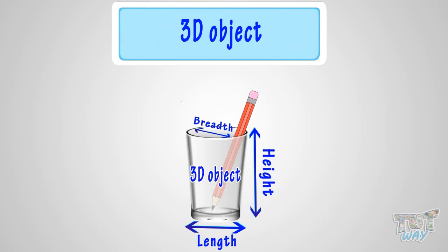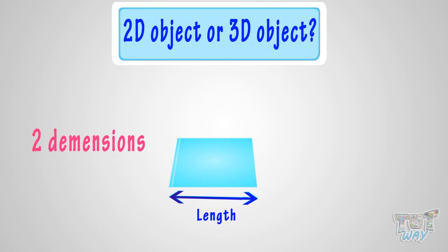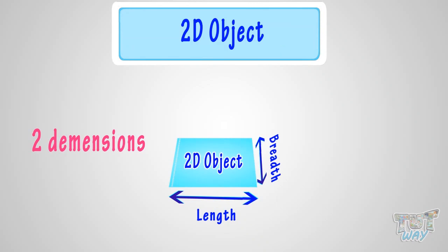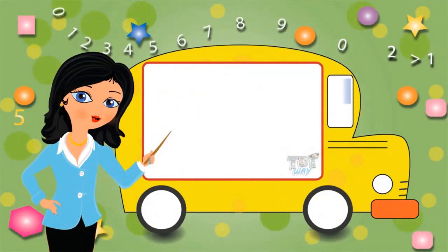Now one more object — is it a 2D object or a 3D object? It's a paper. This object has only two dimensions: length and breadth, and we cannot put something in this object. So it's a 2D object. So kids, today we learned what are 2D and 3D shapes. Now you may go ahead and take a quiz to learn more. Bye bye!